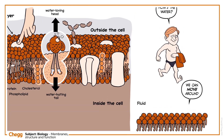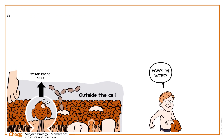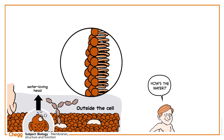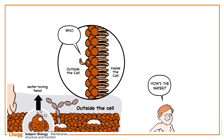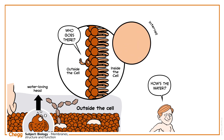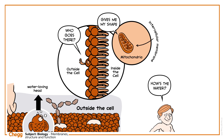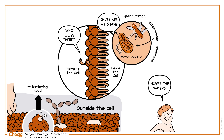Cell membranes act as gatekeepers, establishing a boundary between a cell and its outside environment. Intracellular membranes give organelles like mitochondria their shape, allowing for the specialisation of processes within the cell's components. Cell membranes also provide some structural support to the cell, and act as an interface for communication.